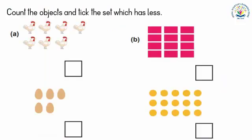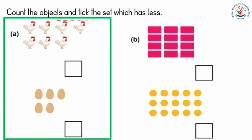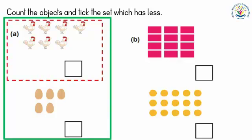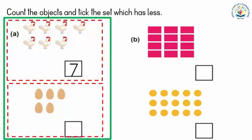Count the objects and tick the set which has less. Set A — how many hands are there? Count and write the number in the given box. Count eggs and write the number in the given box. There are five eggs. Five is less than seven. Eggs are less than hands.